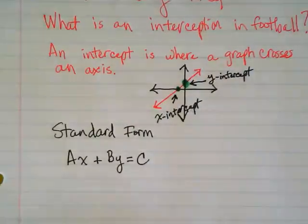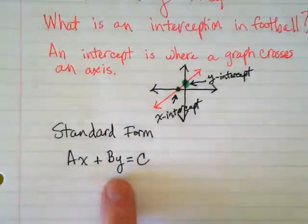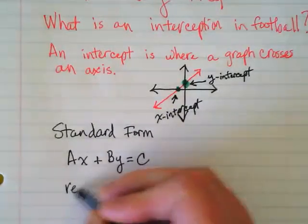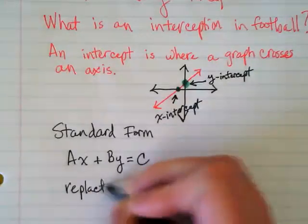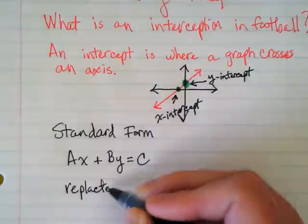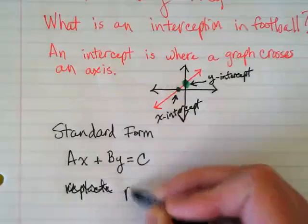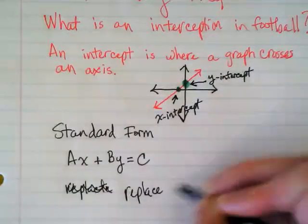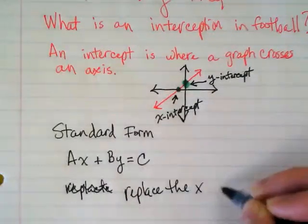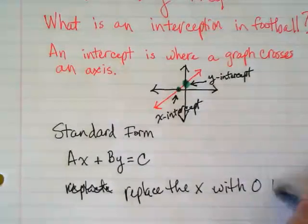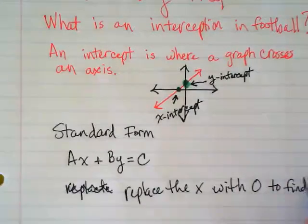If I want to find the y-intercept where it's going to cross the y-axis, I can replace the x with 0 to find the y-intercept.